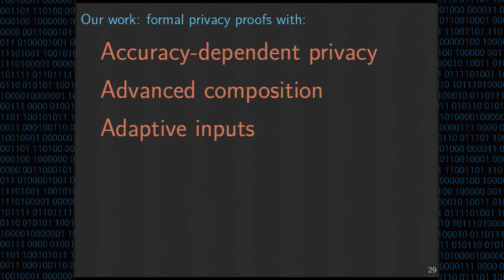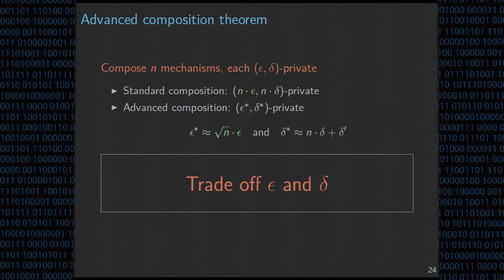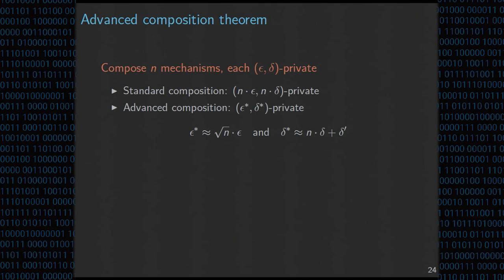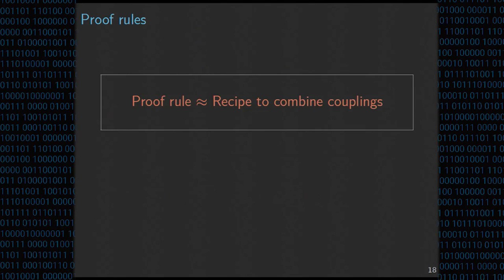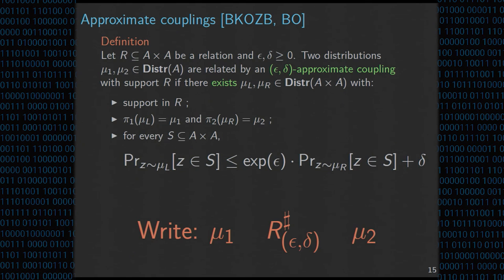On the approximate coupling definition: mu_L and mu_R are distributions over pairs of outputs, and pi1 and pi2 are the probabilistic projections — pi1 is the distribution of the first components and pi2 is the distribution of the second components.